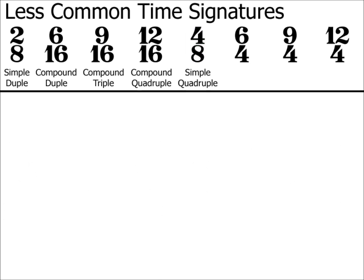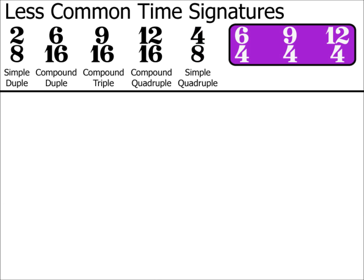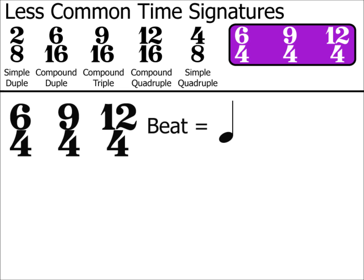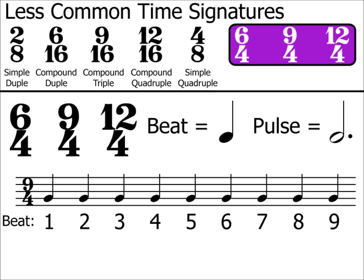Finally, let's look at the time signatures of 6/4, 9/4 and 12/4. These are all based on crotchet beats — hence the 4 at the bottom of the time signature — but the pulse is a dotted minim. Here's a bar of crotchets in 9/4 with the crotchet beat numbers written underneath. The emphasis, or the pulse, falls on beats 1, 4 and 7.